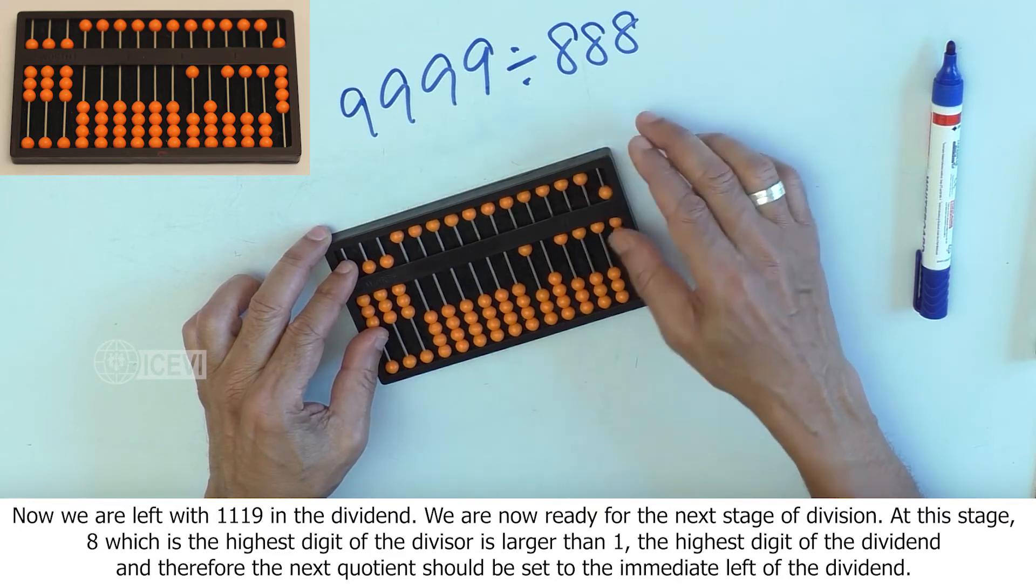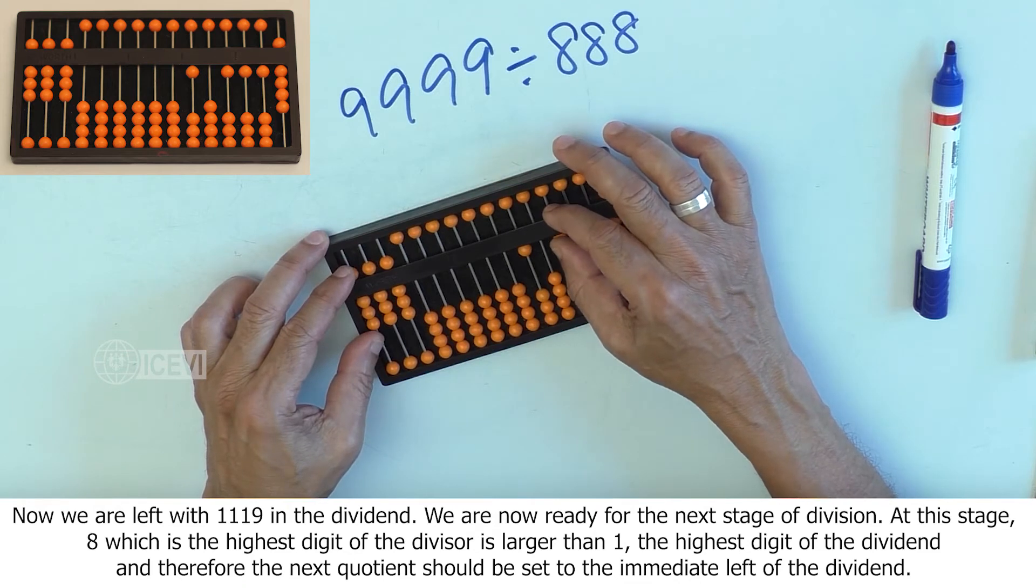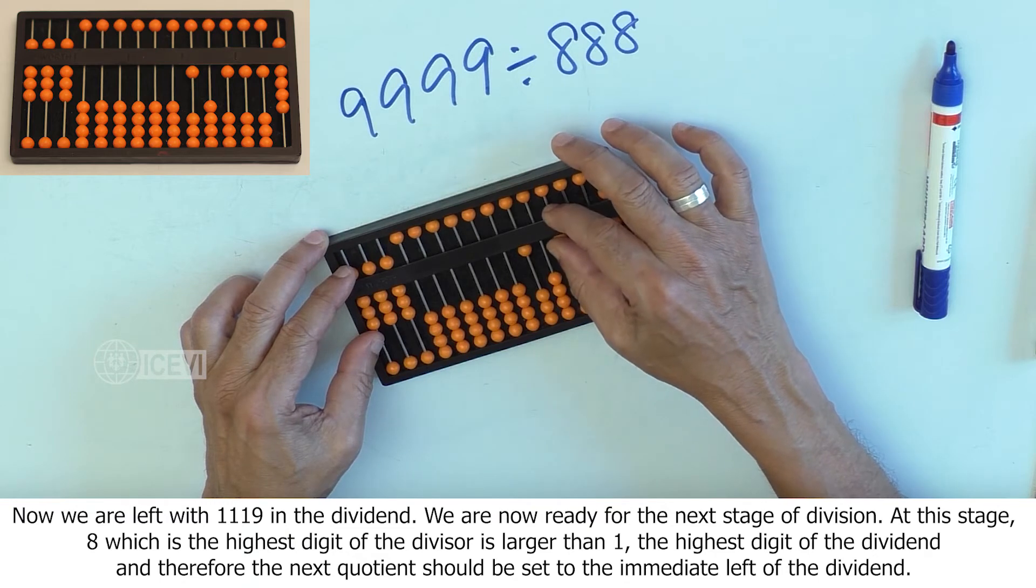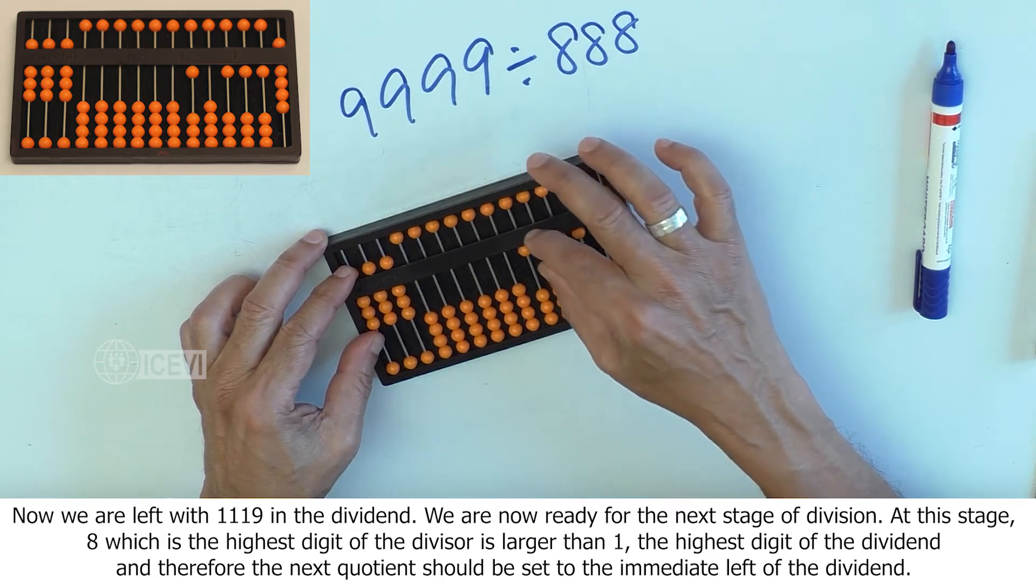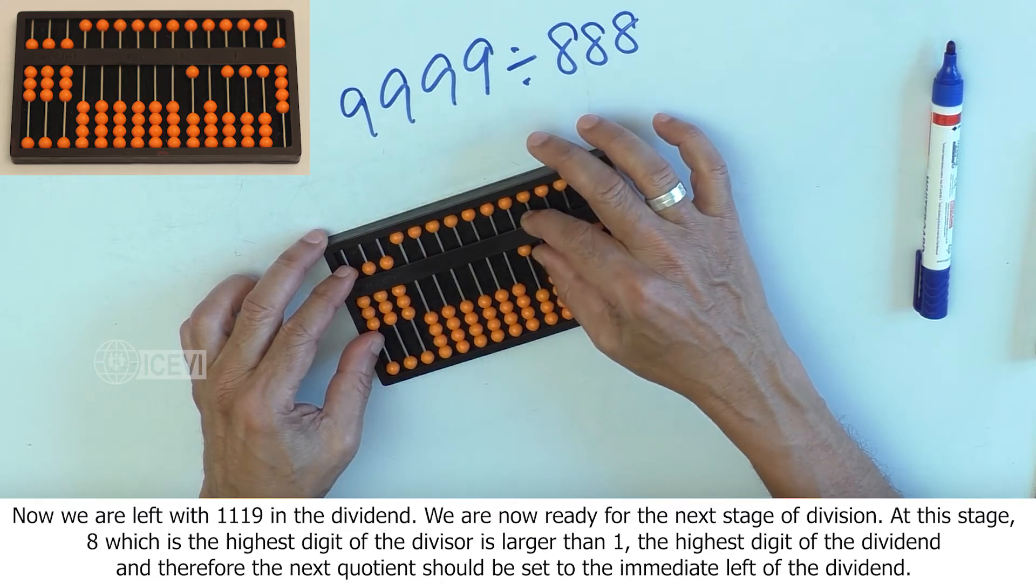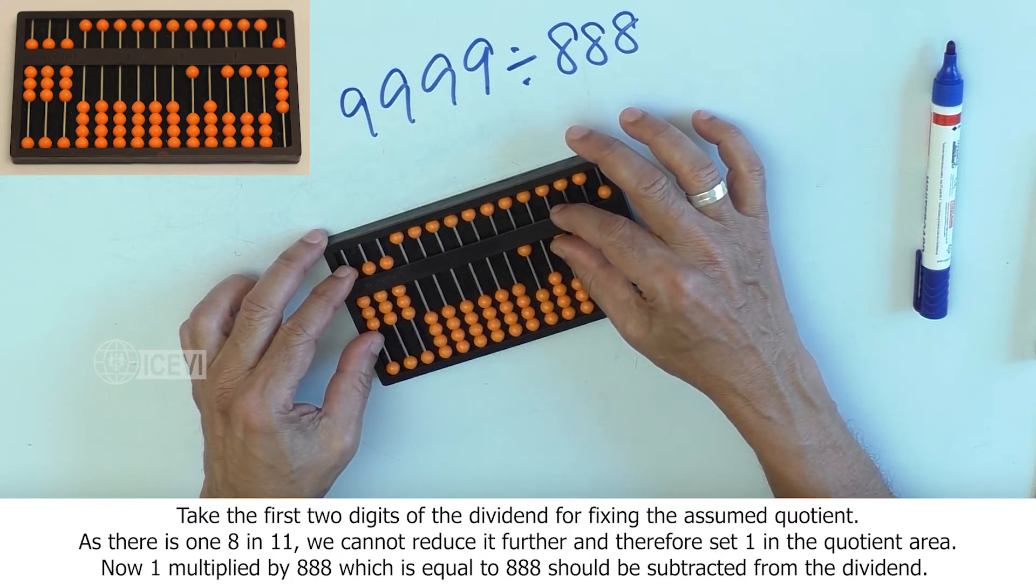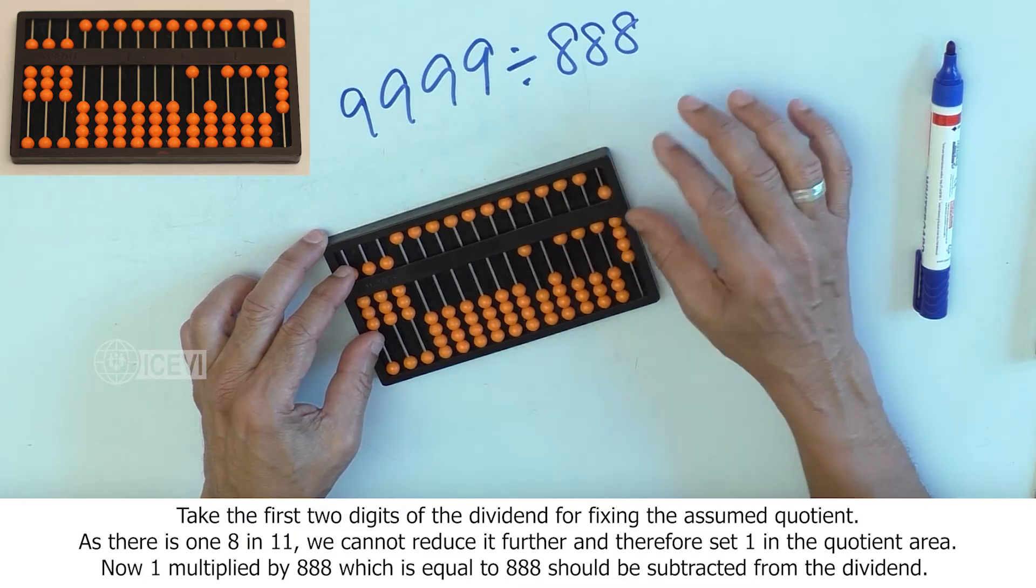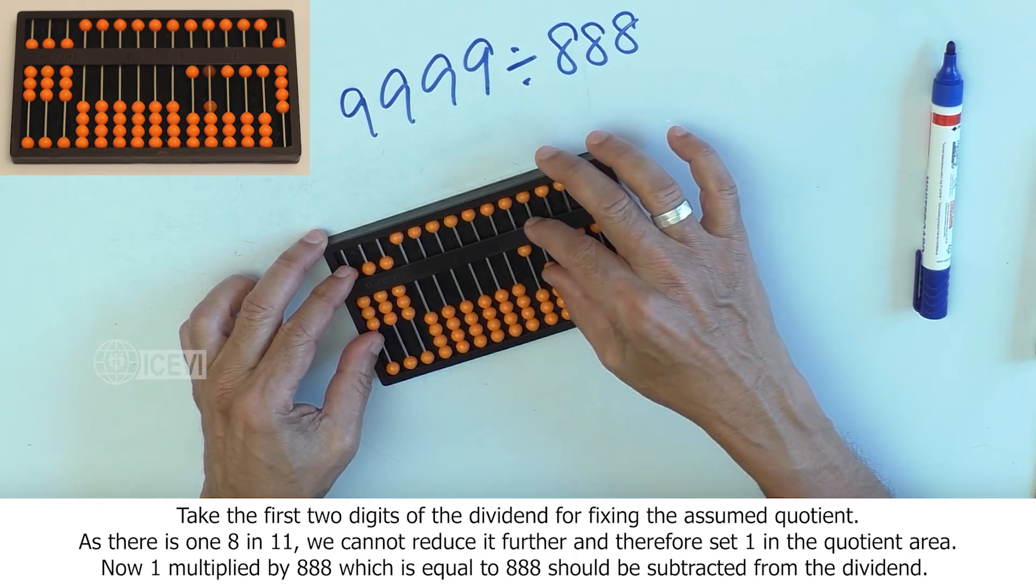We are now ready for the next stage of division. At this stage, 8, which is the highest digit of the divisor, is larger than 1, the highest digit of the dividend, and therefore the next quotient should be set to the immediate left of the dividend. Take the first two digits of the dividend for fixing the assumed quotient. As there is one 8 in 11, we cannot reduce it further and therefore set 1 in the quotient area.